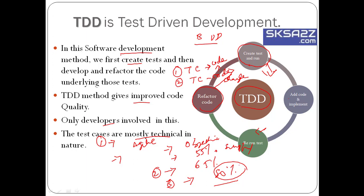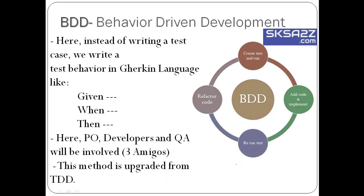This is similar to test-driven development: first you test, then you develop the code. Now we'll go with Behavior Driven Development. BDD is also a software development method. The main difference is that instead of writing a test case, we write test behaviors or test scenarios.